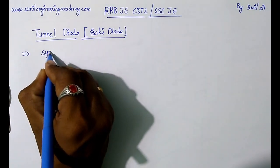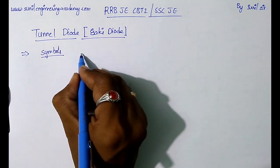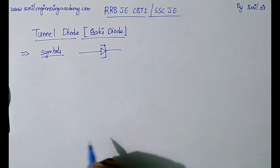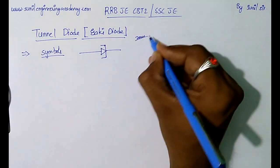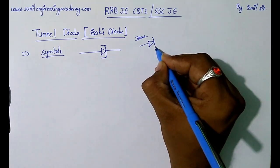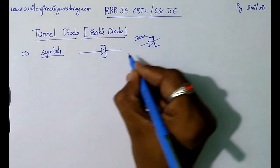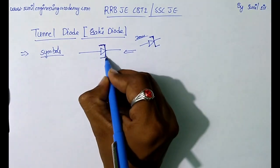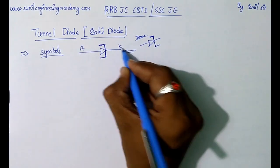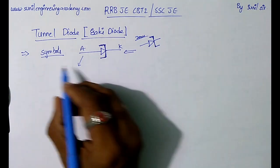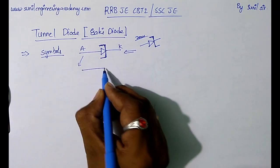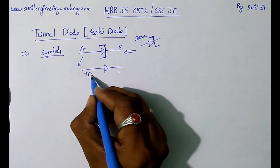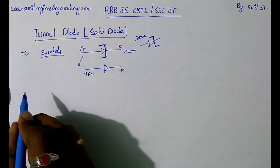The symbol of the tunnel diode is very important. In case of the Zener diode, the symbol is in the Z shape. But the tunnel diode is different — both ends are shaped differently. The tunnel diode has an anode and a cathode, and there is an alternative symbol also used for it.